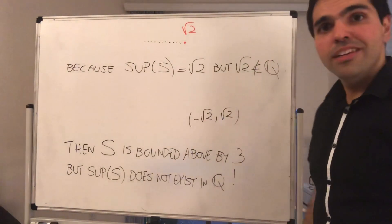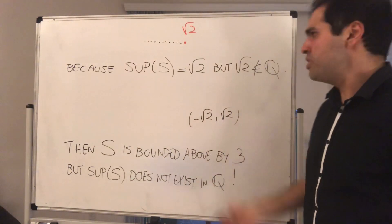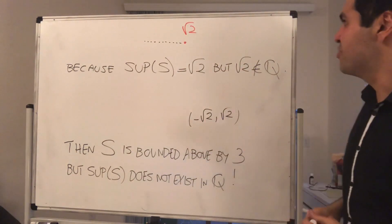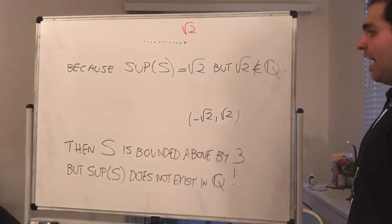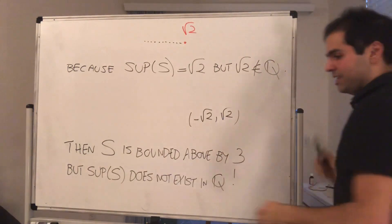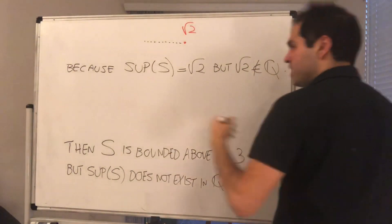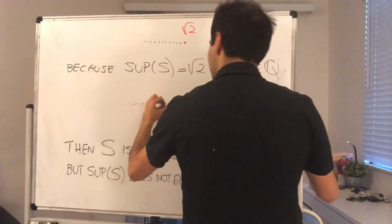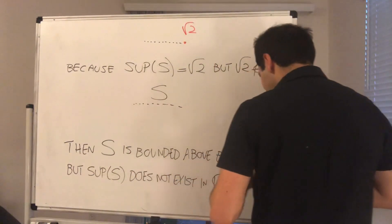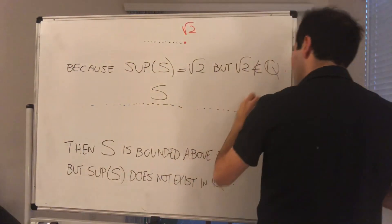So think maybe ancient Greek times before they have found what square root of 2 is, they would just say, well, it doesn't exist. There is no rational number that is the supremum. And I told you this has something to do with the geometry of the rational numbers, because what is going on here, S is this broken set with a lot of holes, and precisely square root of 2 is in one of the holes.